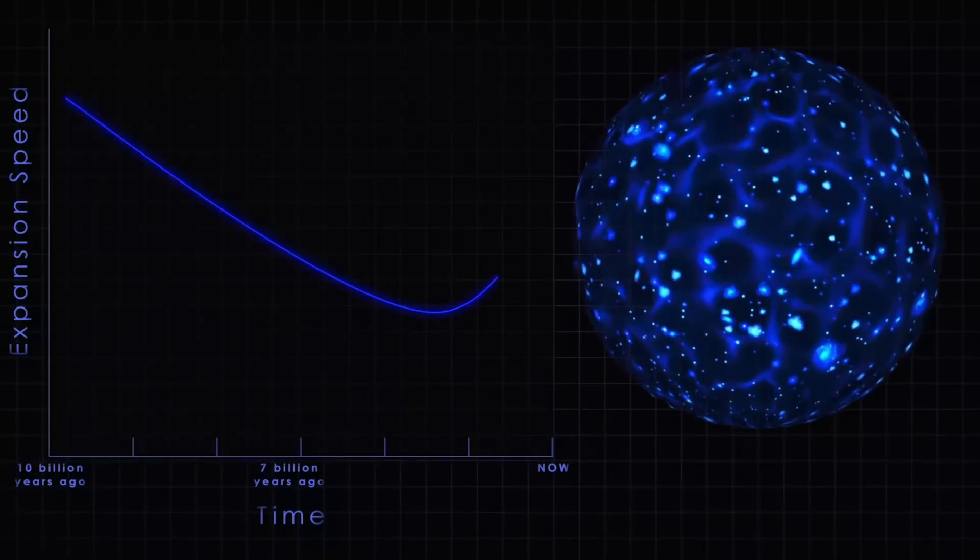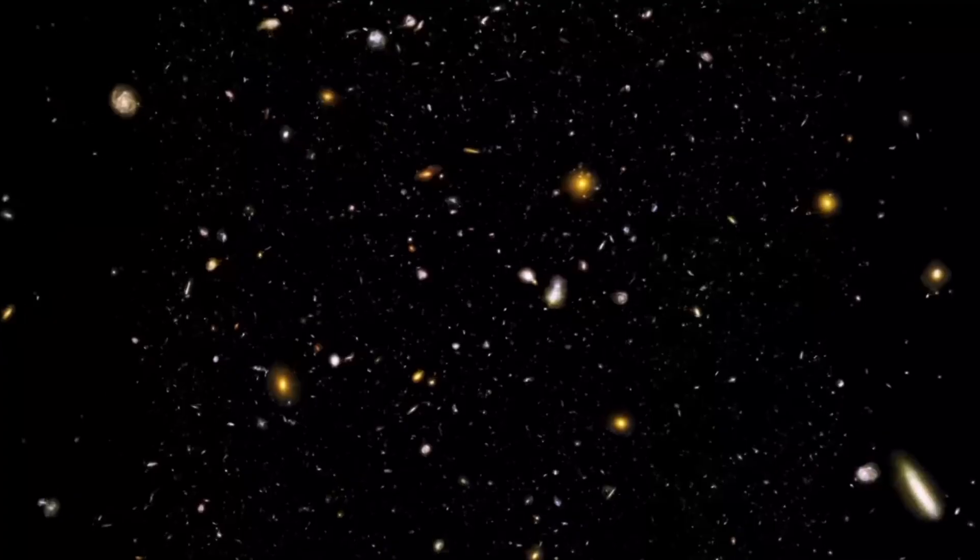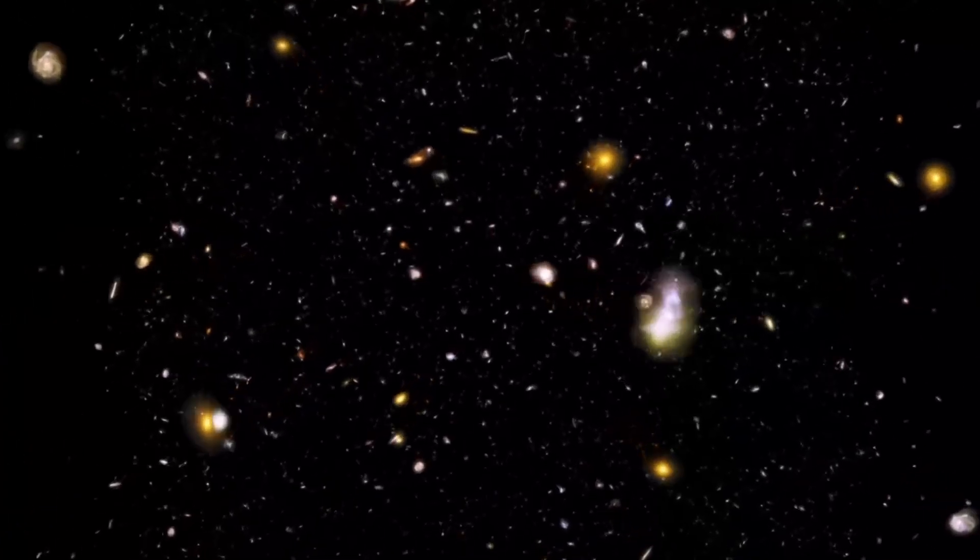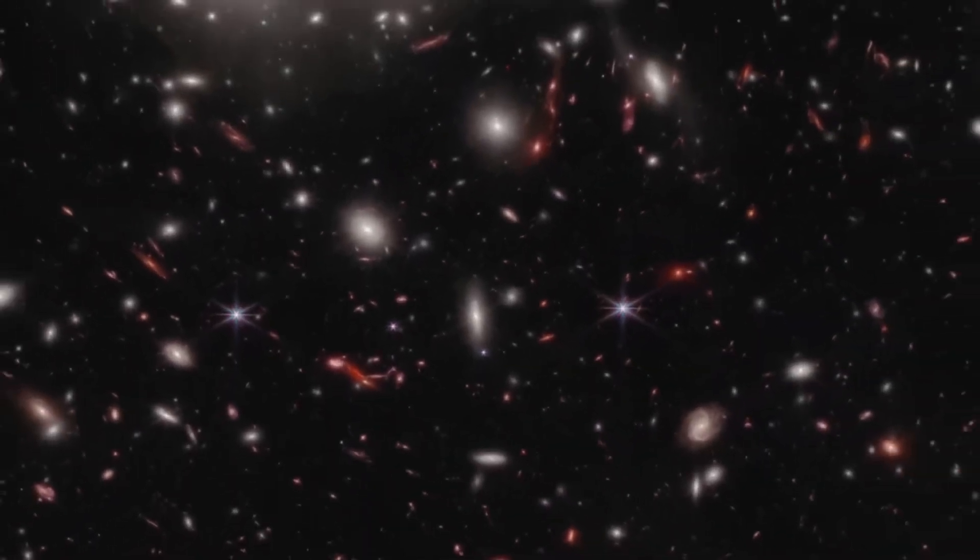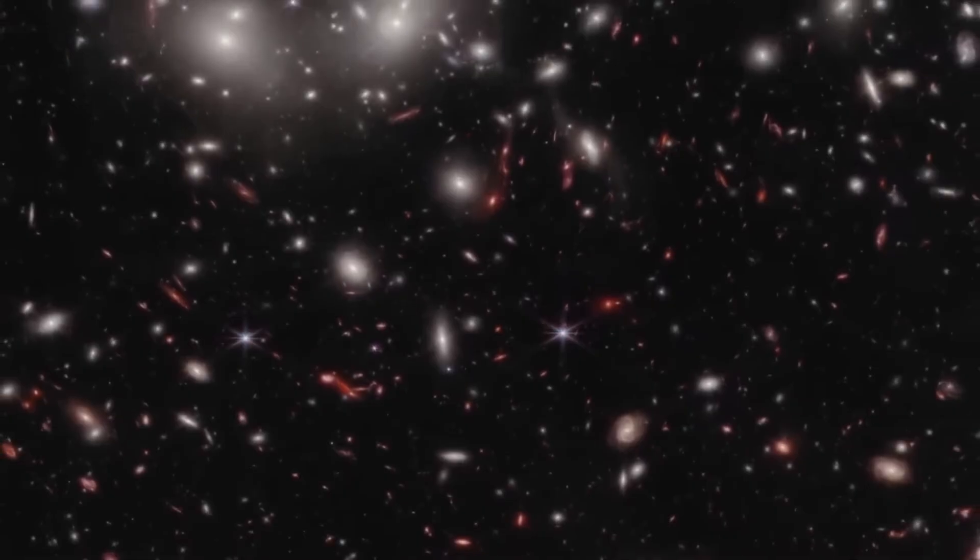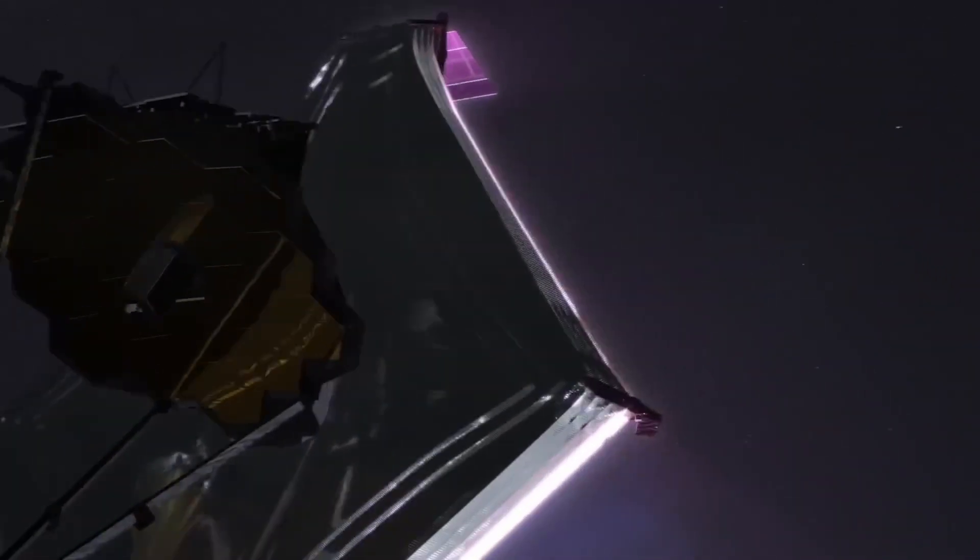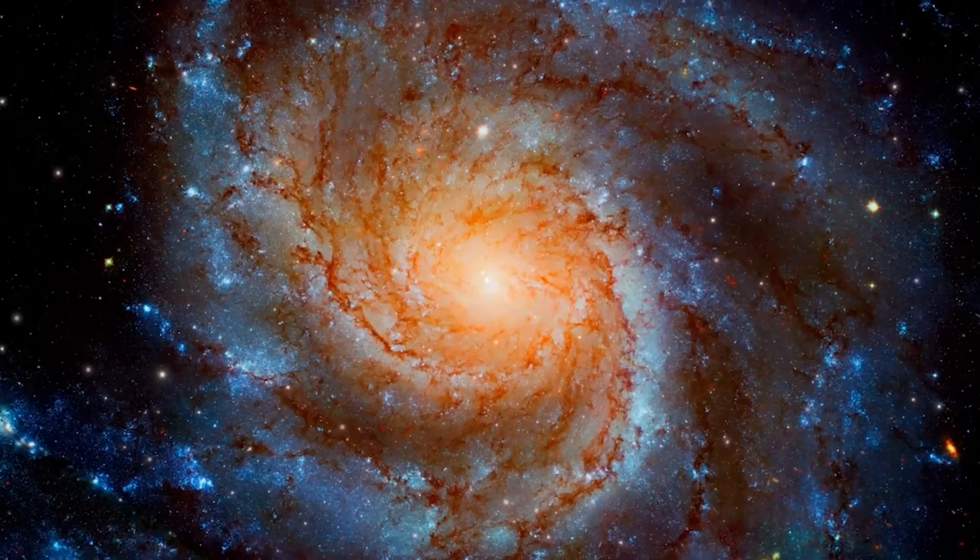Another is that the geometry of space itself isn't as smooth as we thought. A small curvature, a hidden asymmetry, could change how light travels across billions of light years, making distant objects appear older or brighter than they truly are.